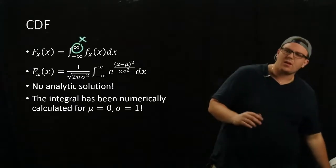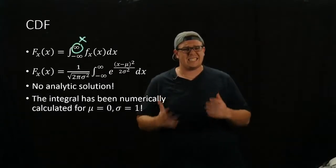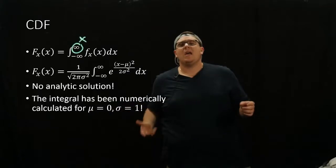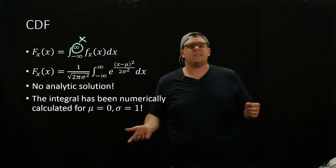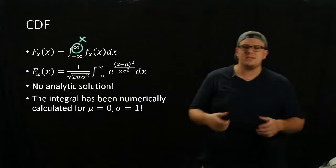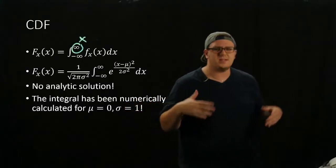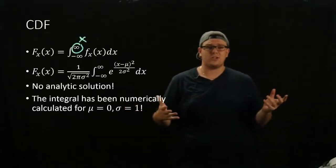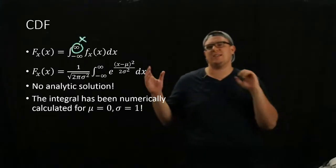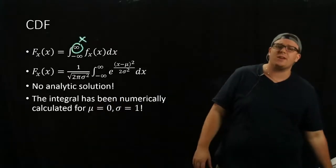Luckily, this has been calculated extensively for a mean of zero and a standard deviation of one — which is our standard normal. This has been calculated through something called the error function. If you ever see something called ERFC, that's the error function, and it's related to the cumulative distribution function of a Gaussian.